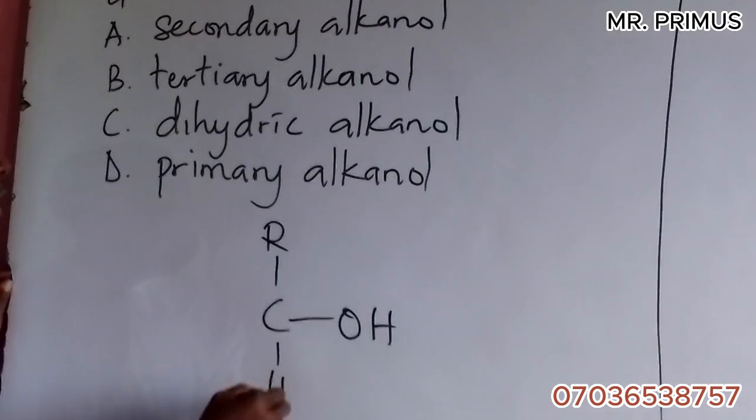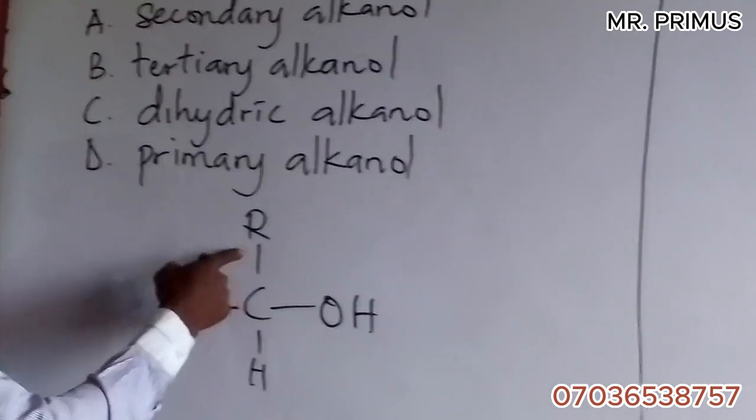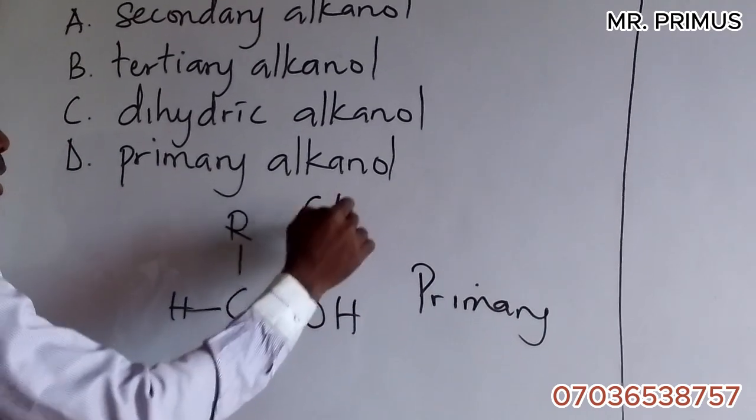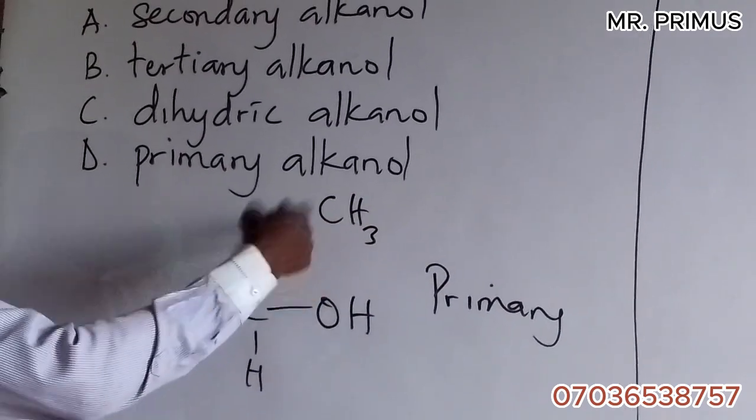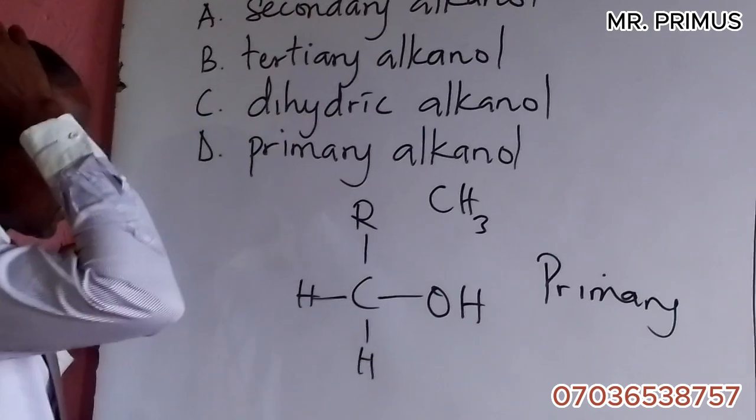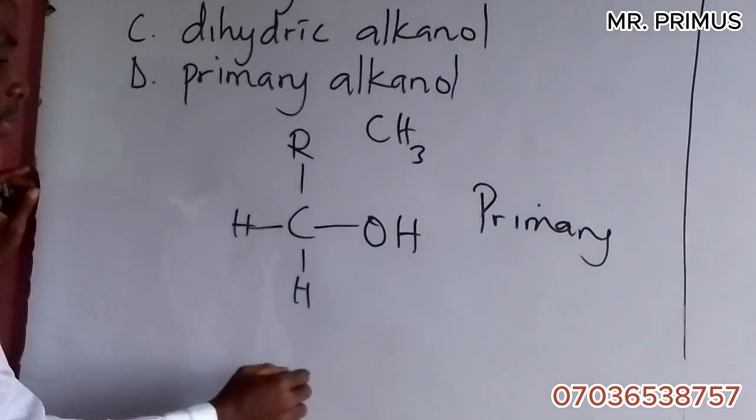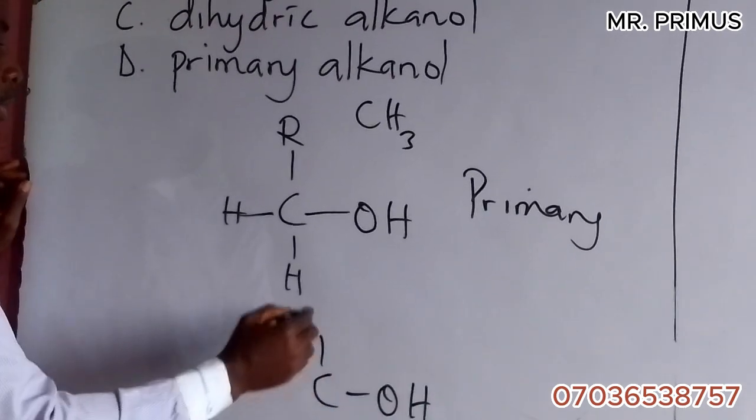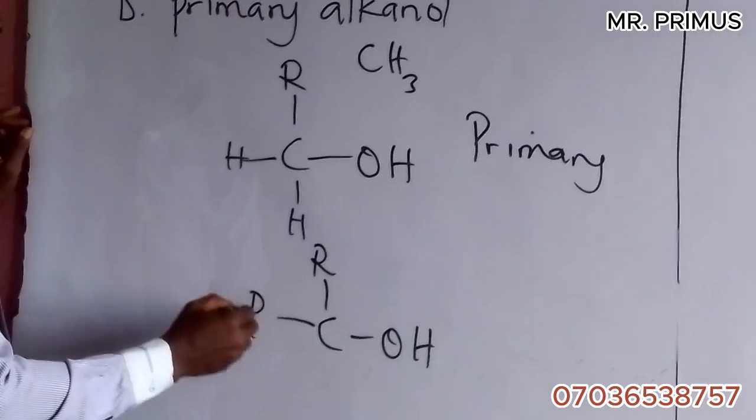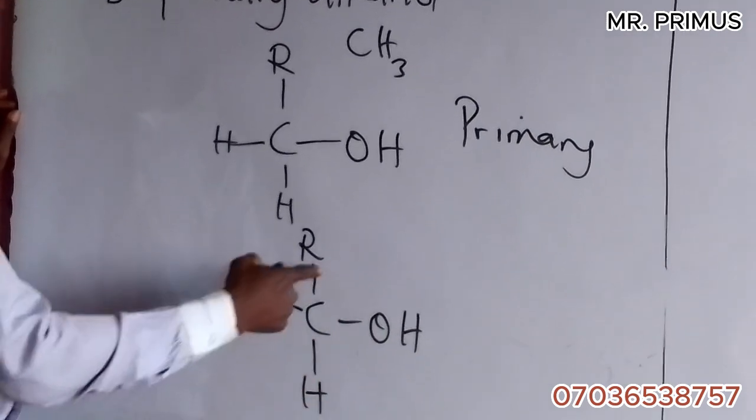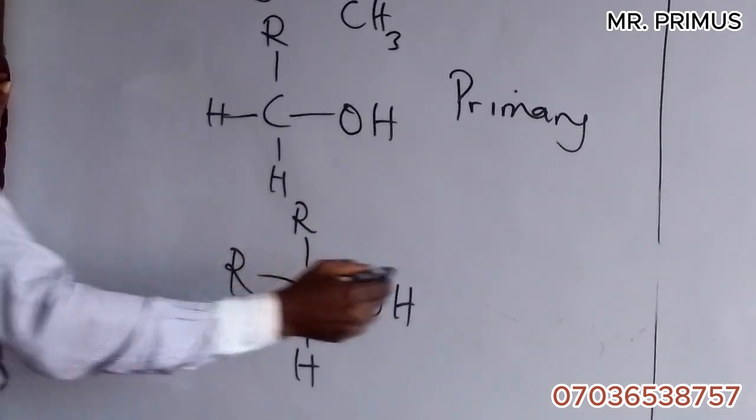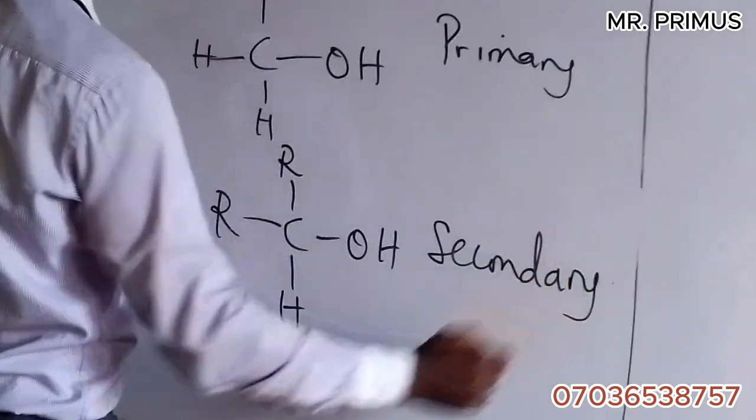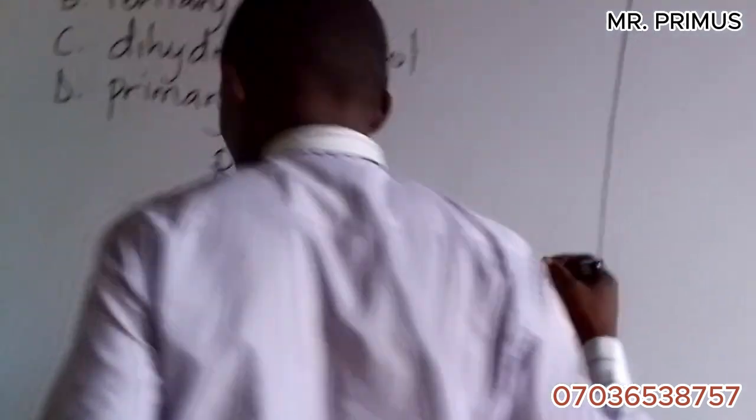If you have something like this: R-C-OH with H and H, this is primary, where R is an alkyl group. If you have C-OH with R, R, and H, this has two carbon atoms attached, so this is secondary.